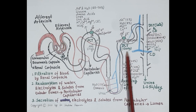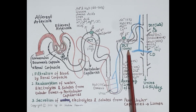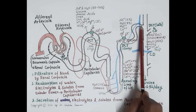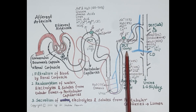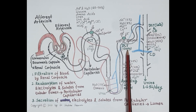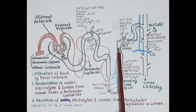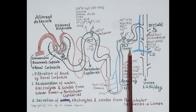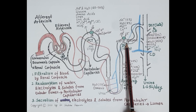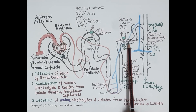Now let's discuss reabsorption in the distal convoluted tubule. For convenience, the DCT is divided into two parts: the early distal convoluted tubule and the late distal convoluted tubule. Around 20 to 25 liters of filtrate reaches the early DCT, containing about 20 percent of the original water and 10 percent of sodium. About 5 percent of sodium is reabsorbed via the sodium-chloride cotransporter, around 8 percent of water is reabsorbed, and calcium and magnesium are also reabsorbed here.